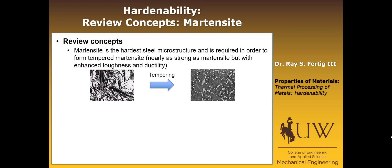If we have a martensite microstructure, under tempering we form tempered martensite, which is not actually the same phases. Martensite being a body-centered tetragonal phase, tempered martensite being cementite particles in an alpha ferrite matrix.